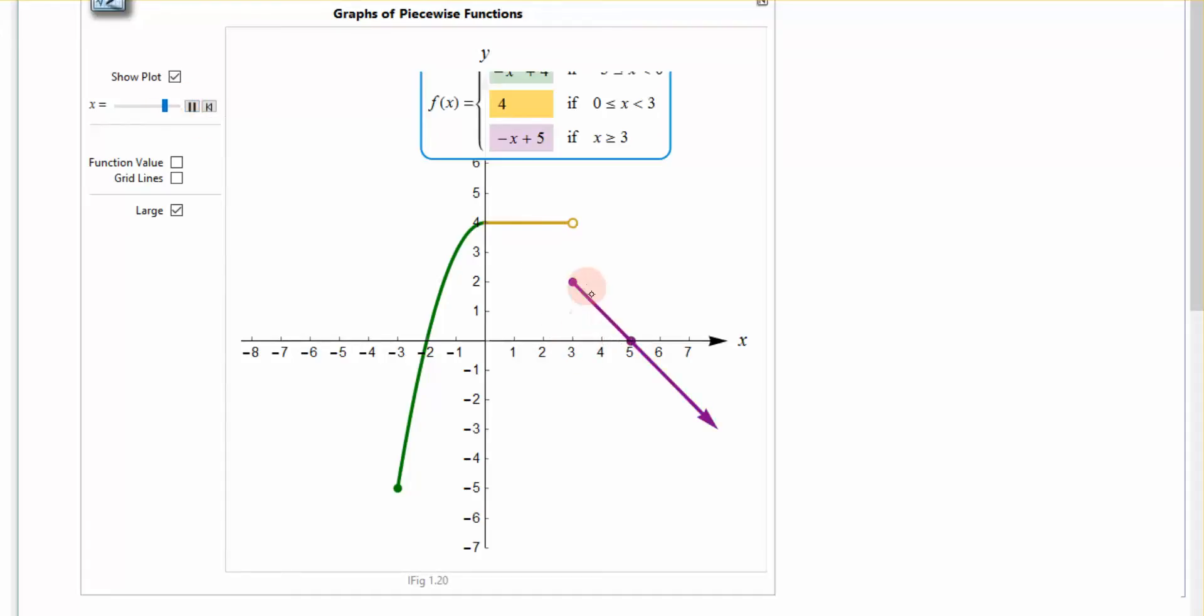Once I reach 3, my function is on the third part of the piecewise function. So you can see that it depends really what your x value is to know which piece of the graph you're even going to be in.